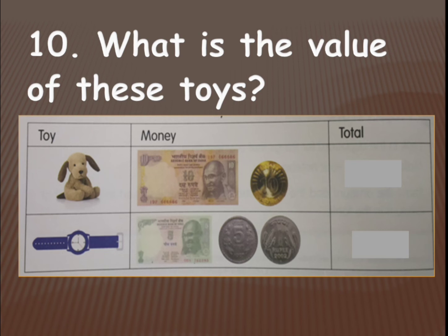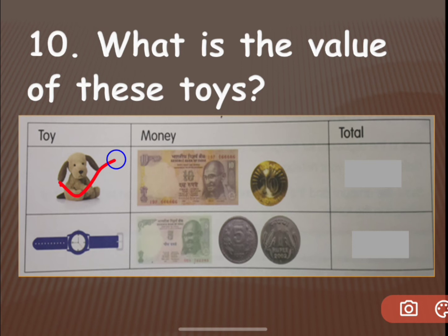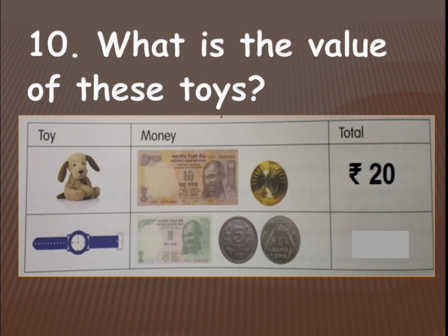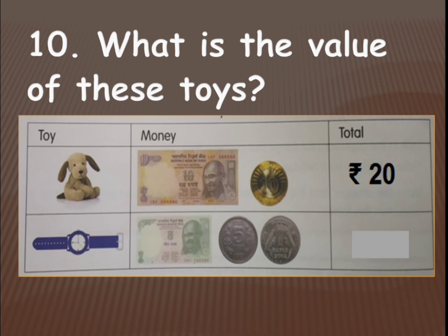Now let's see the next question — what is the value of these toys? Here there are some coins and notes and we have to find the total cost. The stuffed dog has two 10-rupee notes, so 10 plus 10 is 20 rupees. For the watch, there is a 5-rupee note, a 5-rupee coin, and a 1-rupee coin: 5 plus 5 is 10, plus 1 is 11 rupees.